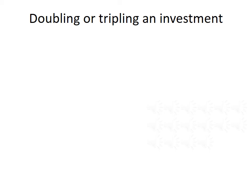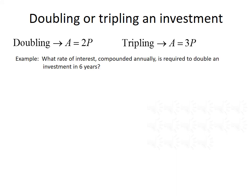Finally, we'll talk about doubling or tripling an investment. If you double your investment, the amount A equals 2 times the principal. To triple an investment, A would equal 3 times P. For example: what rate of interest, compounded annually, would be required to double an investment in 6 years?